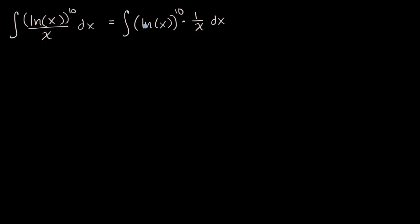Now it's clear — we have some function, natural log of x, being raised to the 10th power, but we also have its derivative right over here: one over x. So we could make the substitution. We could say that u is equal to the natural log of x, because we can see its exact derivative present in the integrand.